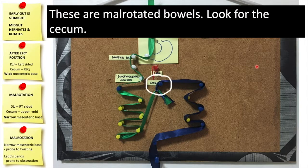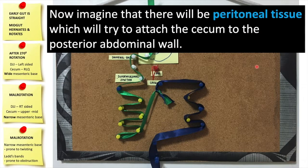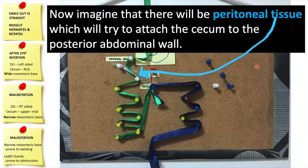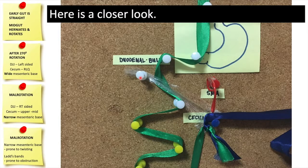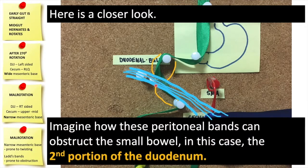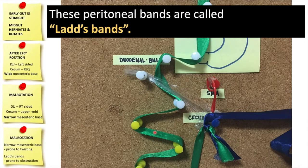Let's look for the cecum here. Now imagine that there will be peritoneal tissue which will try to attach the cecum to the posterior abdominal wall. Here you are. There's that peritoneal tissue. Here's a closer look at that peritoneal tissue. Imagine how these peritoneal bands can obstruct the small bowel and in this case the second portion of the duodenum.